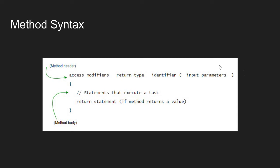Let's look at method syntax. A method is defined in two pieces. First, we have the method header, which consists of access modifiers, a return type, an identifier, and input parameters. Then we have a code block attached to the method header — this is the method body, which contains all the statements that execute some work, and then potentially a return statement if that method returns a value.